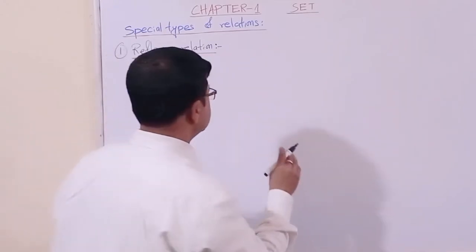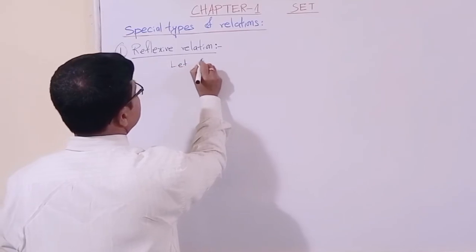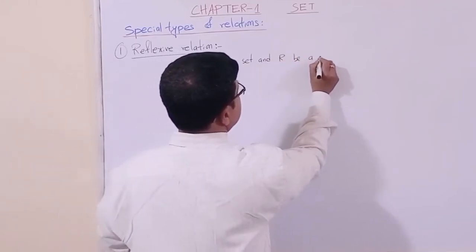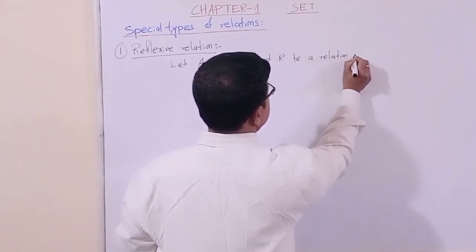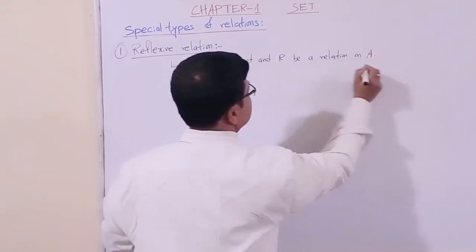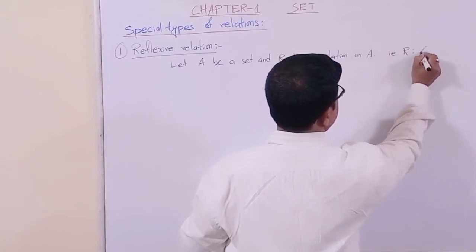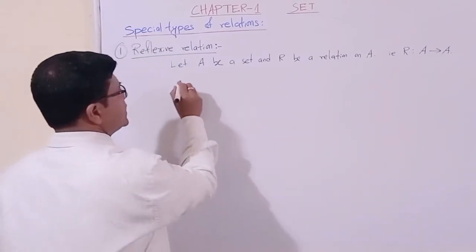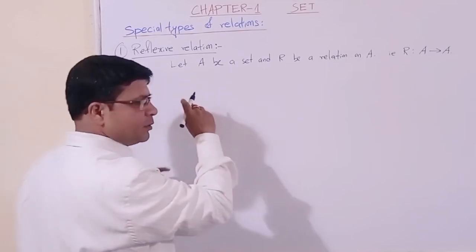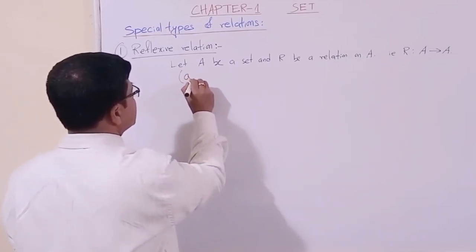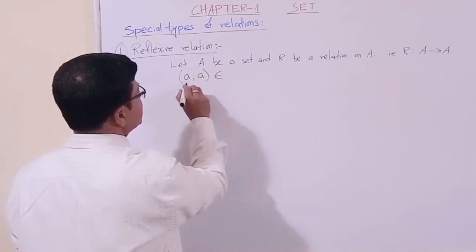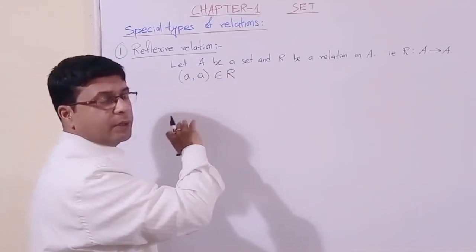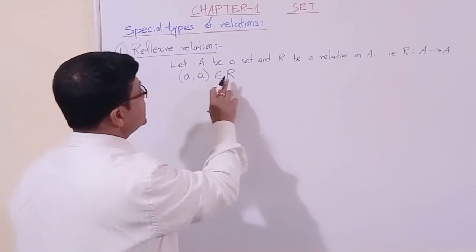Now let us see what is reflexive relation. Let A be a set and R be a relation from A to A. In reflexive relation, for every element a in A, the ordered pair (a, a) must belong to the relation — for example, (1,1), (2,2), (3,3) and so on.